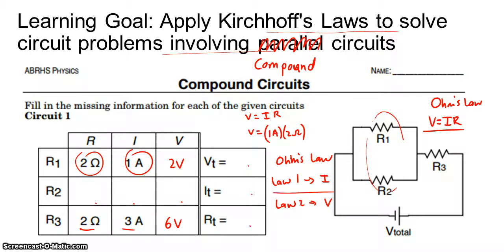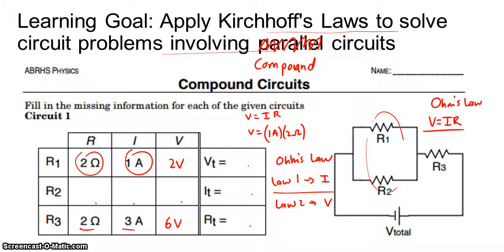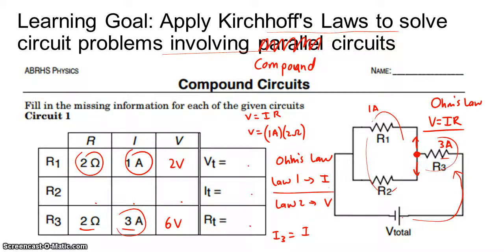Let's pick one. The first law has to do with current — the current into a junction is equal to the current out of a junction. So let's visualize what's happening. R3 has 3 amps, R1 has 1 amp. We can visualize the current flowing in either direction; it's not going to make a difference. What the first law is saying is that here's a junction — the current splits. Some of the current is going to go this way, and some is going to go that way. So the current through the third one is equal to the current through the first one plus the current through the second one.